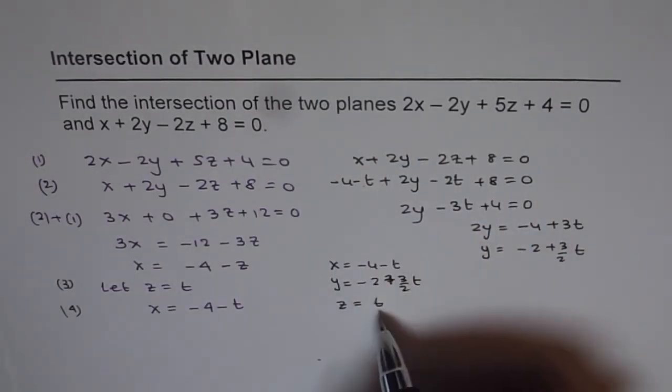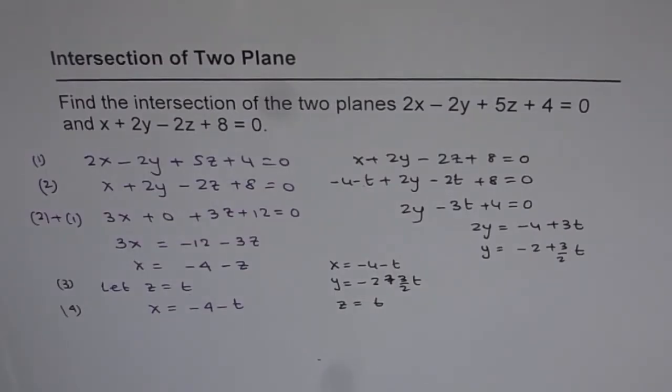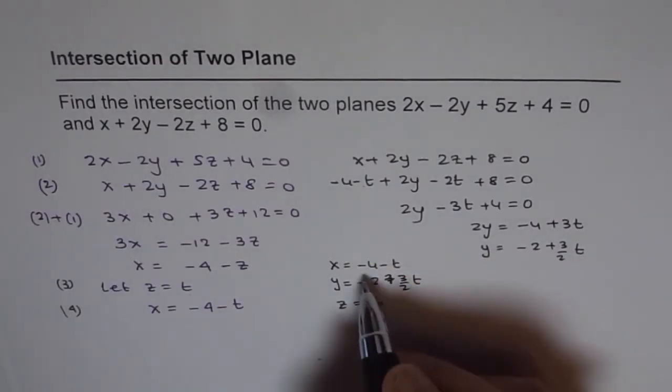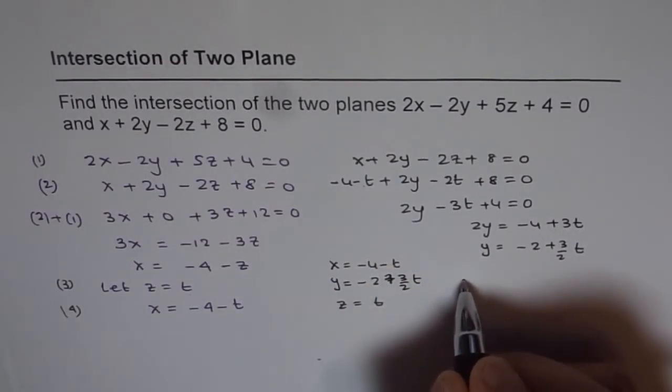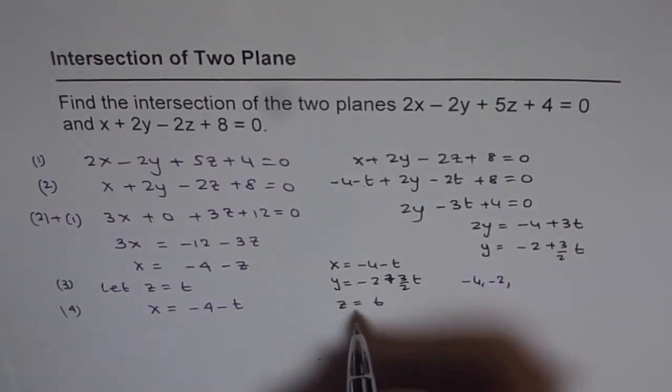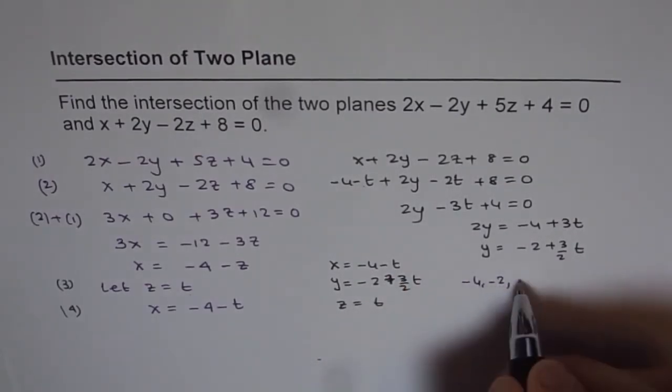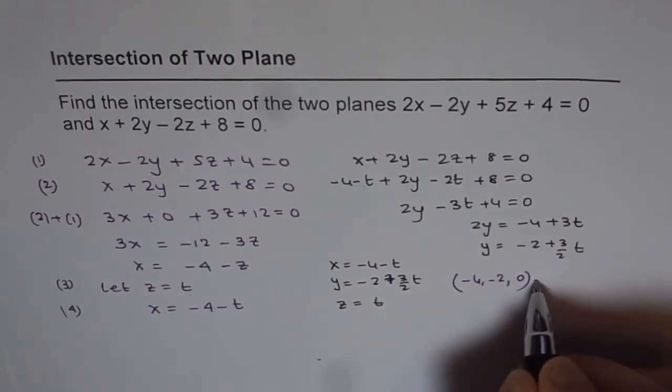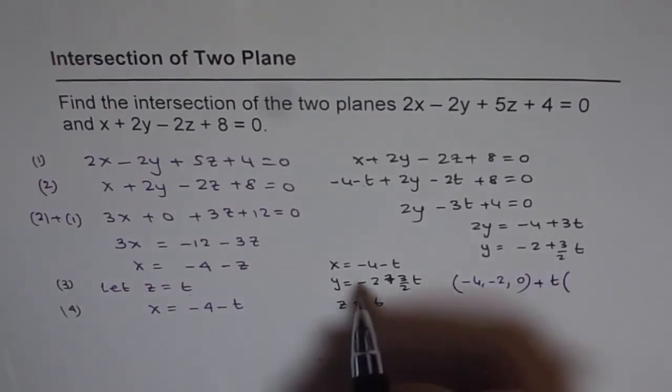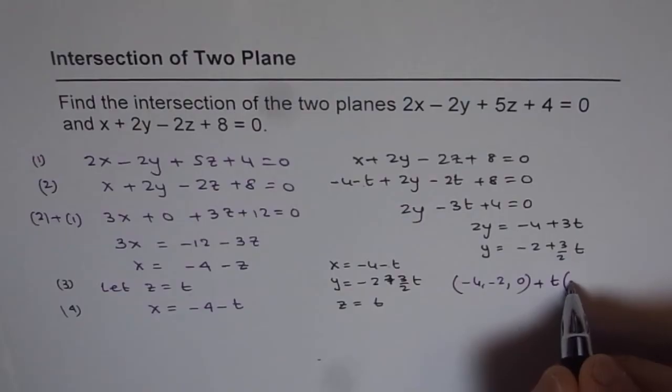We can write this line in vector form. In vector form, we get the point (-4, -2, 0) plus t times the direction vector (-1, 3/2, 1).